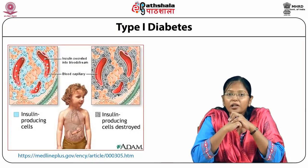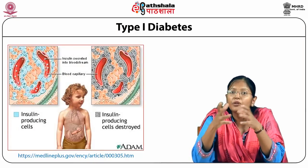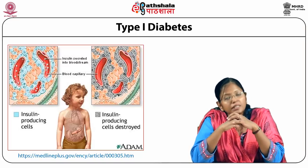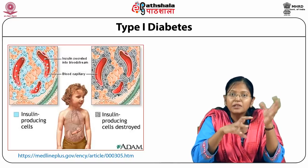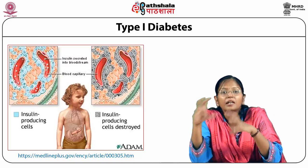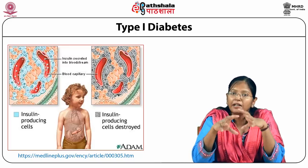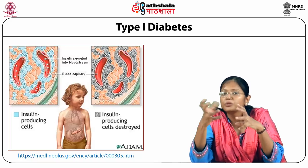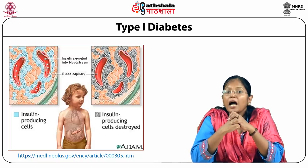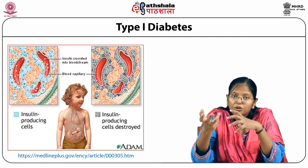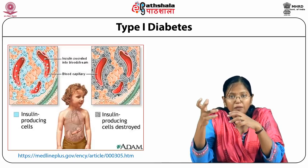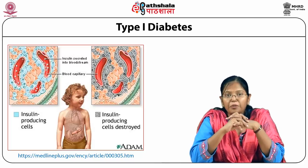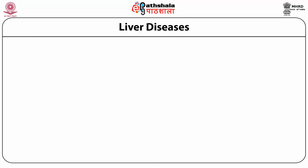Even type 1 diabetes, where the pancreas is not able to produce insulin, can be treated with stem cell transplant. In this case, stem cells from the source can be directly inserted into the pancreas, where they can differentiate into insulin-producing pancreatic cells. These cells can then produce normal insulin which, with the help of other growth factors inside the body, can treat a diabetic patient.